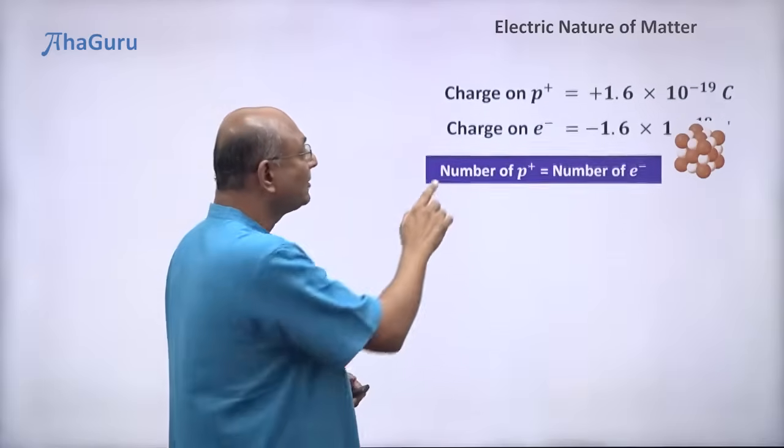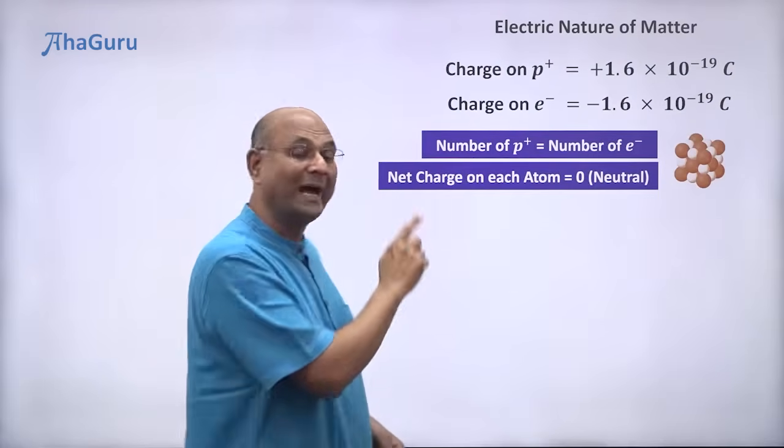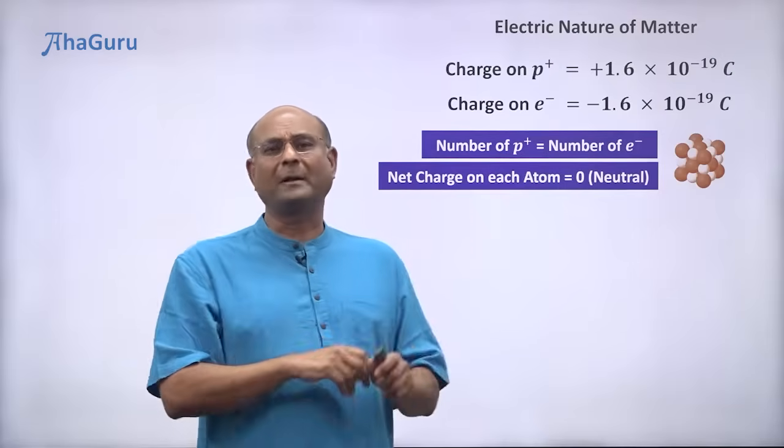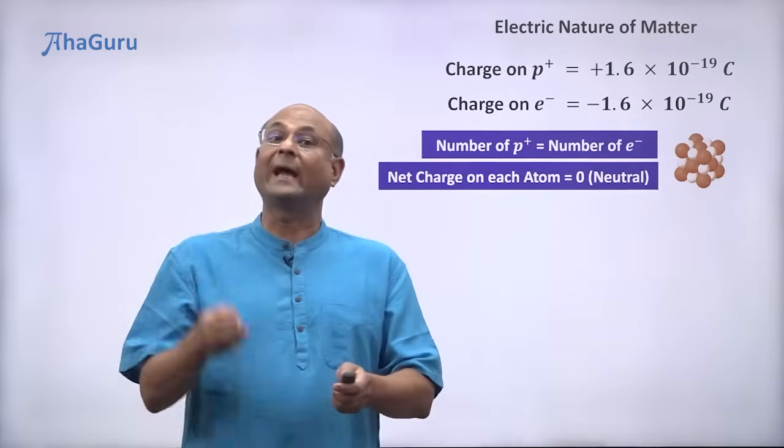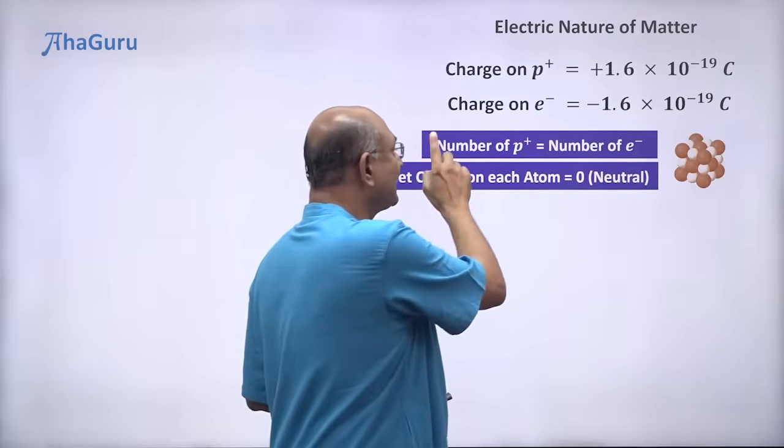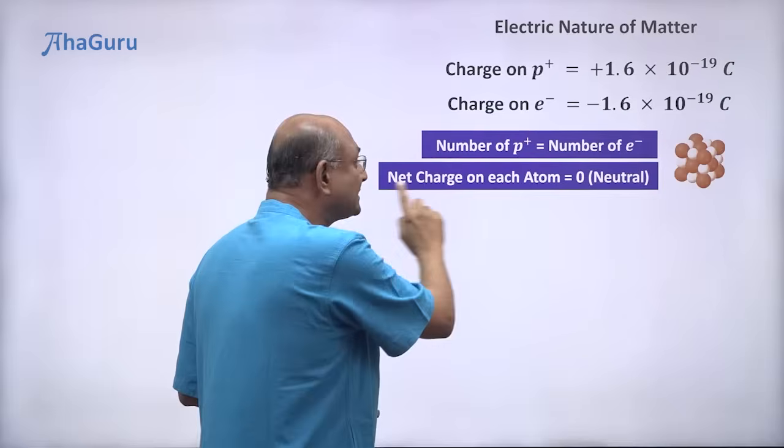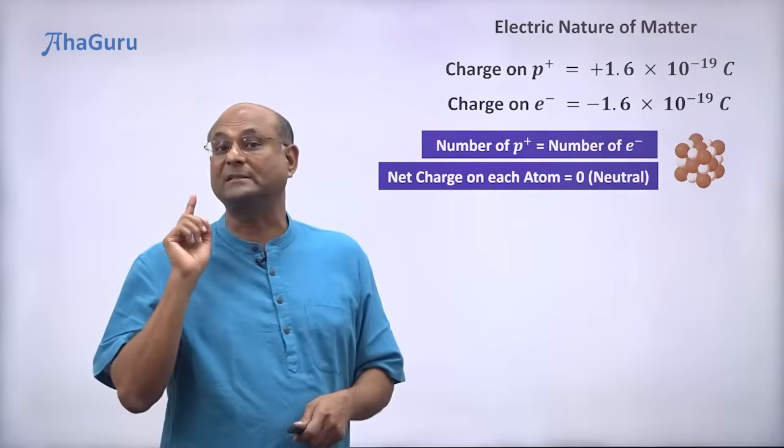Because the number of protons is always equal to the number of electrons, I showed it with two and two, but you might have four and four. For example, carbon has six protons and six electrons. So always the net charge on each atom is zero.